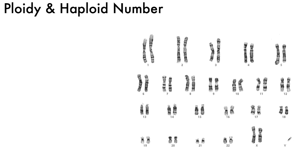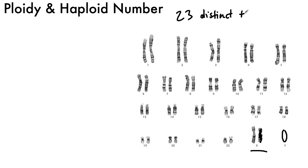Here we have a human karyotype. You can see that this is a female because it has two X chromosomes, but if this chromosome is gone and we had a smaller Y chromosome, this one would be male. You'll notice that there are 23 pairs of chromosomes, and even if it's an X and a Y and they don't exactly look the same, we still count that as one single type. So there are 23 distinct types of chromosomes.